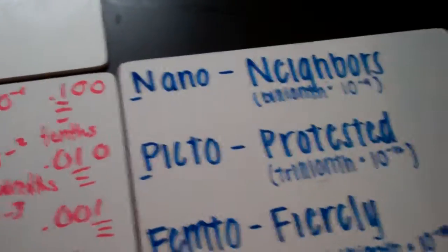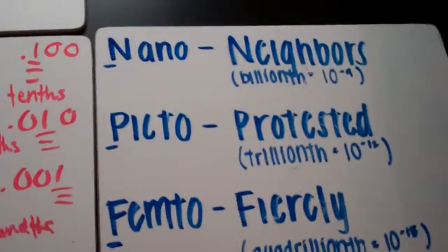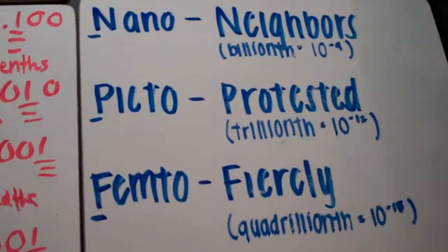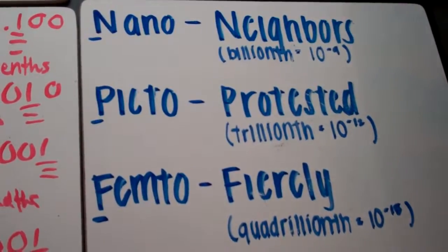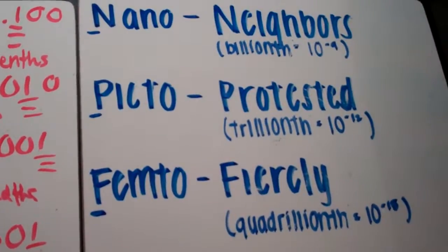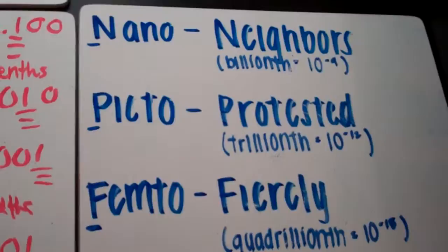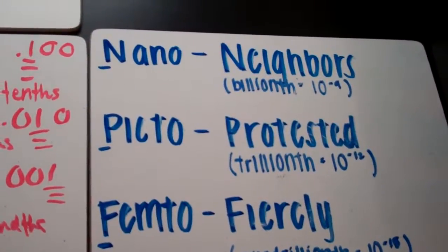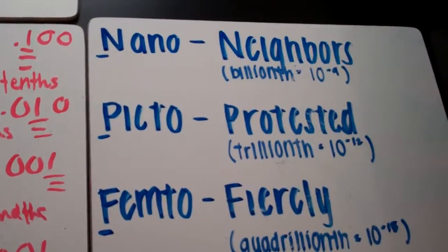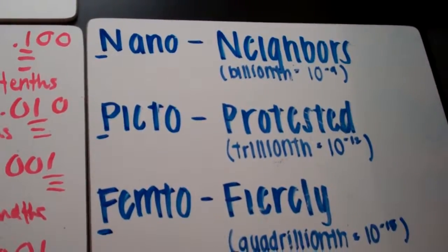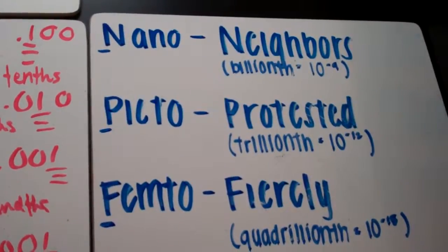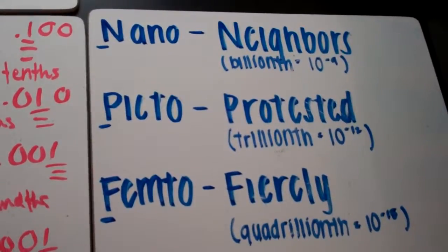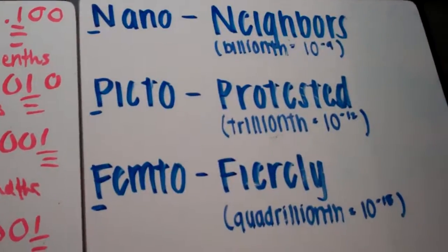Finally, we have 'Neighbors Protested Fiercely,' which stands for Nano, Pico, and Femto. Nano means the billionth, which is 10 to the power of negative 9. Pico means the trillionth, which is 10 to the negative 12th. And Femto means quadrillionth, which is 10 to the negative 15th.